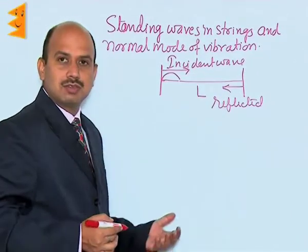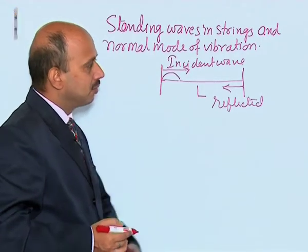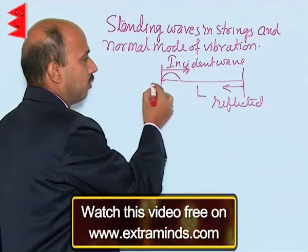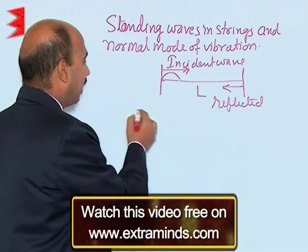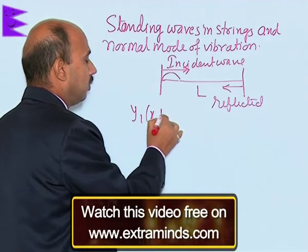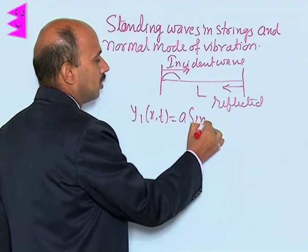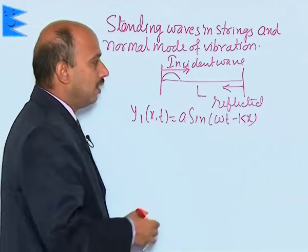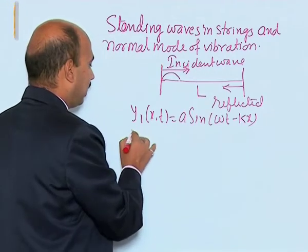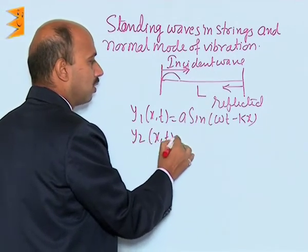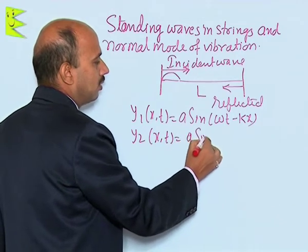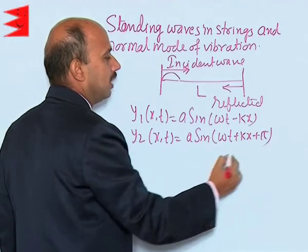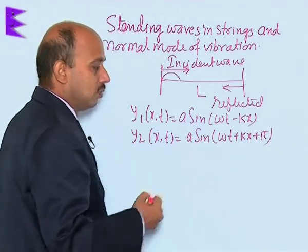Since the wave is being reflected from the rigid support, there is a phase reversal — a phase difference of 180 degrees. So for the incident wave, the wave going from left to right, we can write y₁(x, t) = a sin(ωt − kx), and for the reflected wave we can write y₂(x, t) = a sin(ωt + kx + π), where the phase reversal of π represents 180 degrees, giving us −a sin(ωt + kx).